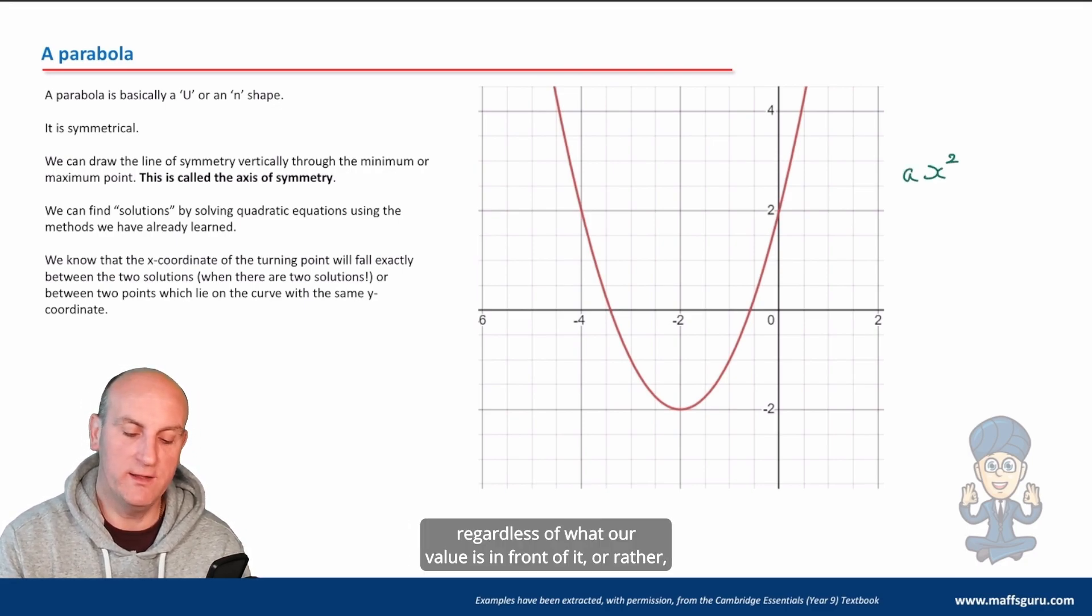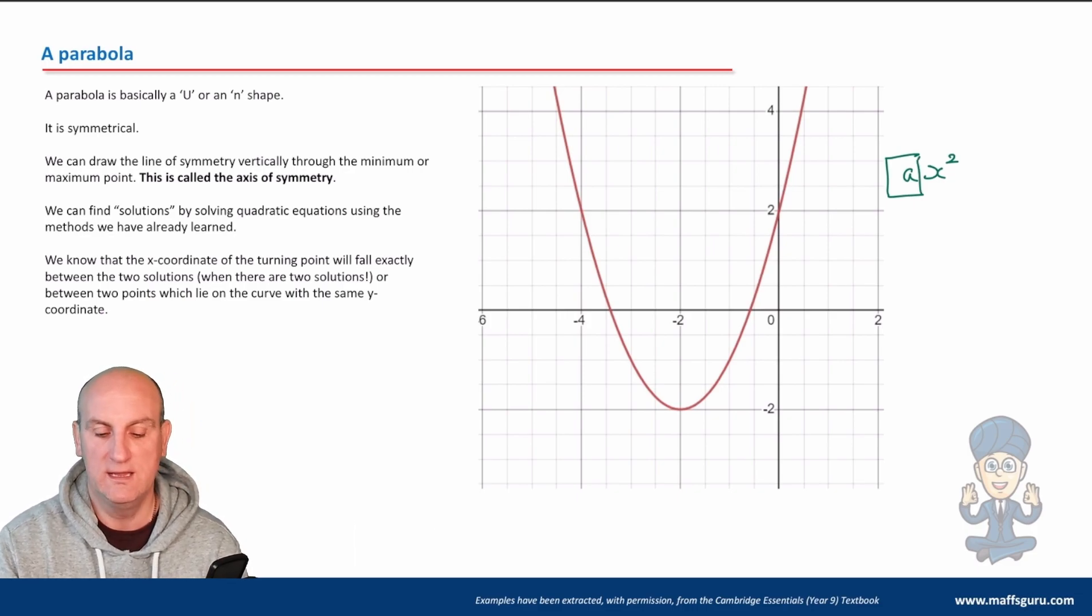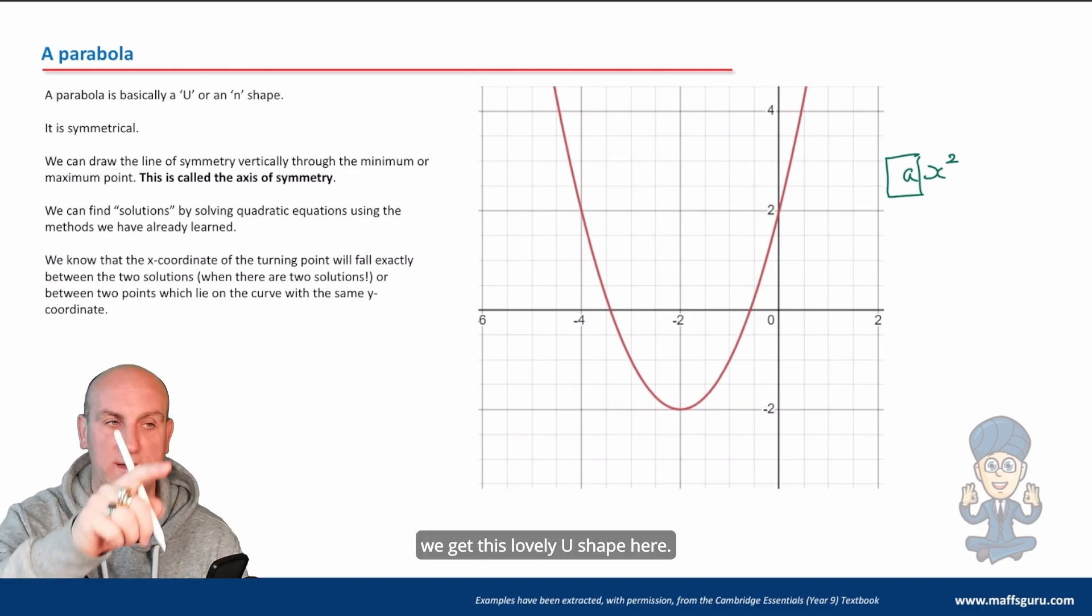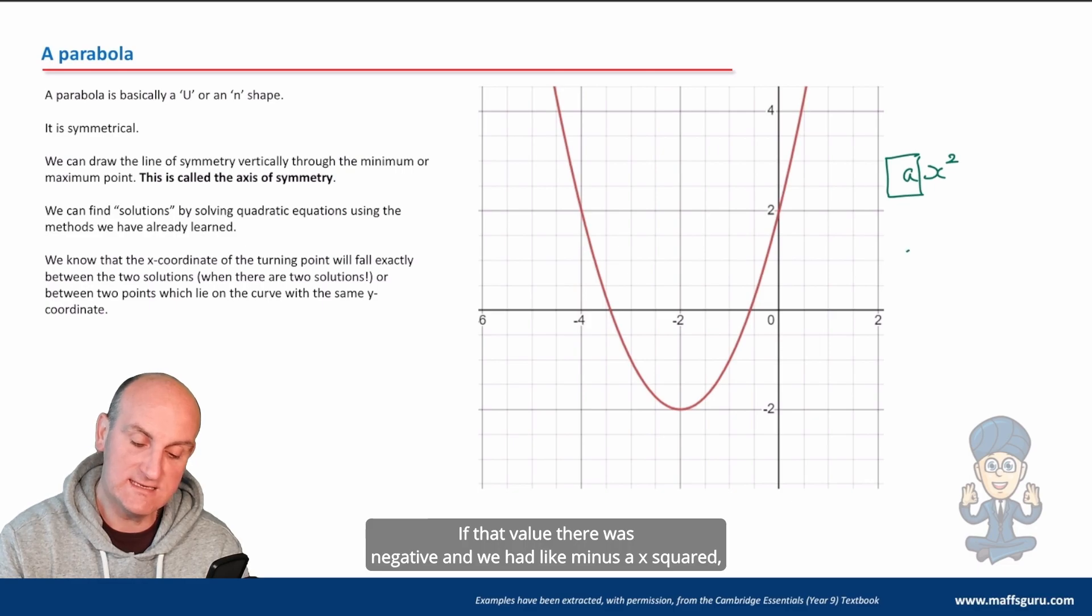The way we know that is when our x squared term, regardless what our value is in front of it, when the number in front of the x squared is positive we get this lovely U shape here.